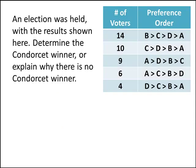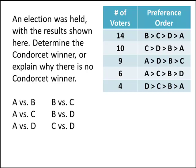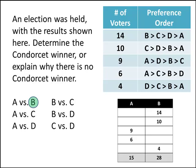Let's look at another example. We have a similar voter profile and again four candidates, giving us six one-on-one matchups. Going through them quickly — feel free to pause to verify the totals — the results are: B beats A, C beats A, D beats A, B beats C, D beats B, and C beats D.